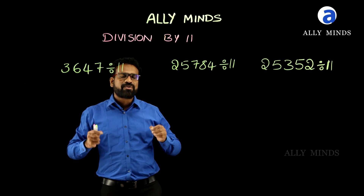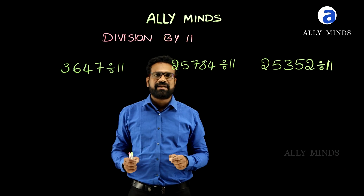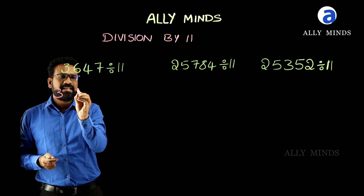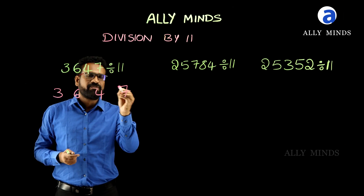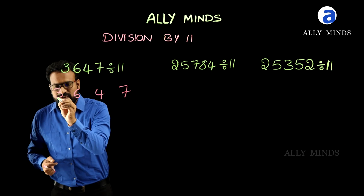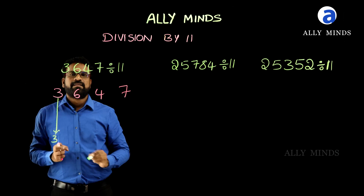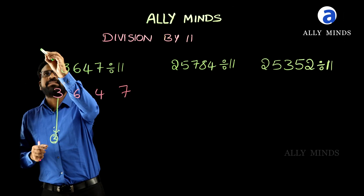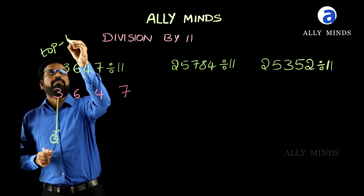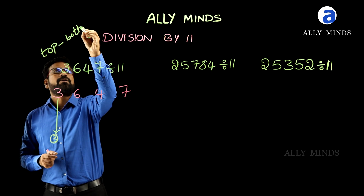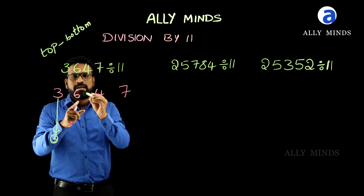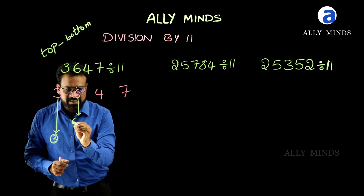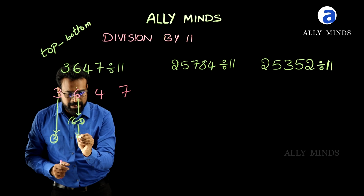In this video you are going to learn how to divide any given number by 11. Write the given number — 3647 is our given number. First, drop the 3 here. We have to subtract the bottom number from the top number. The top number is 6 and the bottom number is 3, so 6 minus 3 is 3.